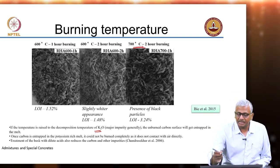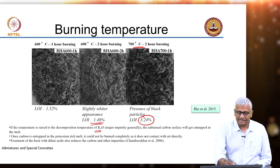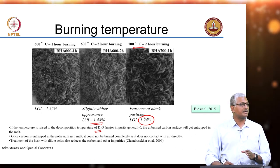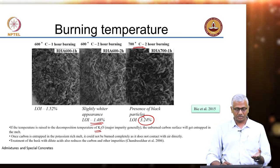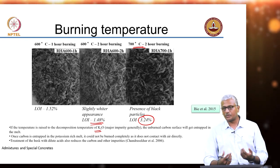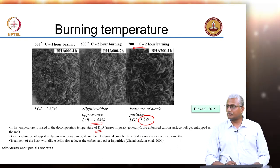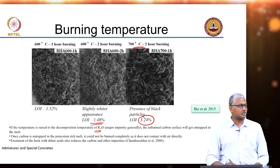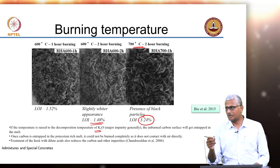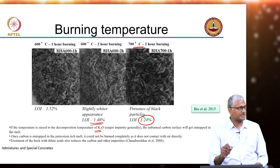That is why at 700°C at 2 hours of burning it actually leads to a higher LOI compared to 600°C at 2 hours. At 700°C you are closer to the decomposition temperature of potassium oxide, which captures unburnt carbon and does not allow it to oxidize as CO₂. Because of this you need very clear control on the rate of cooling or burning and the temperature to which you are burning when processing rice husk ash.